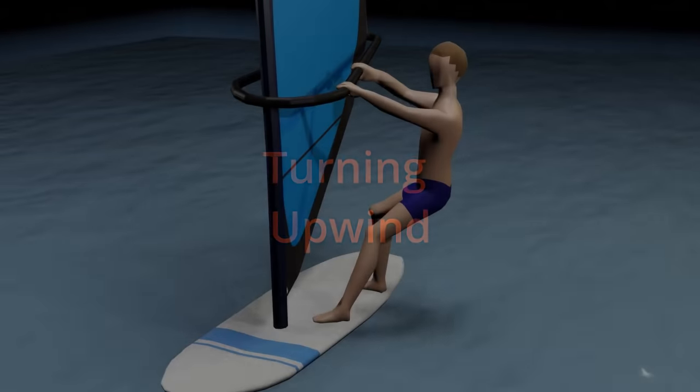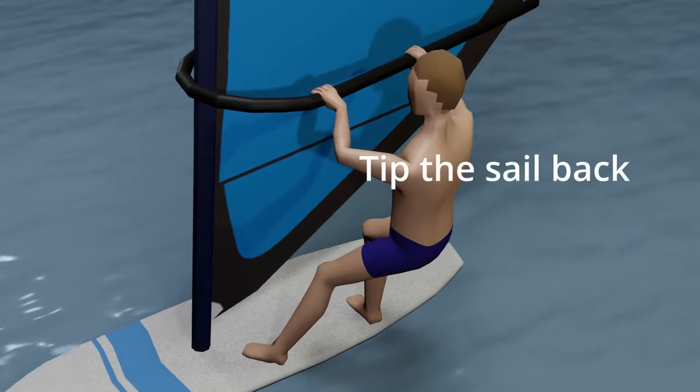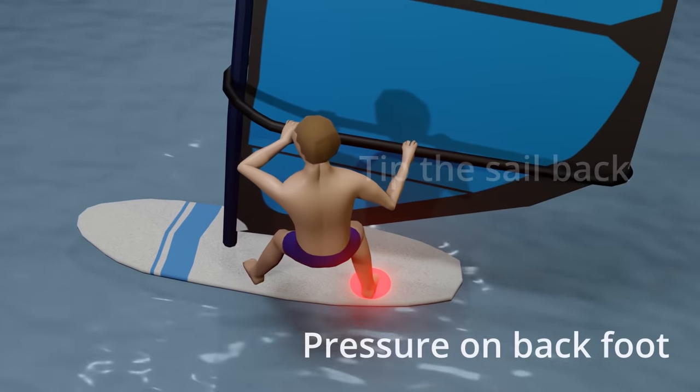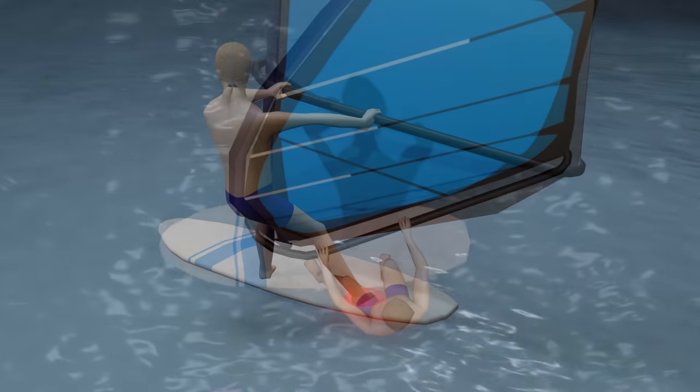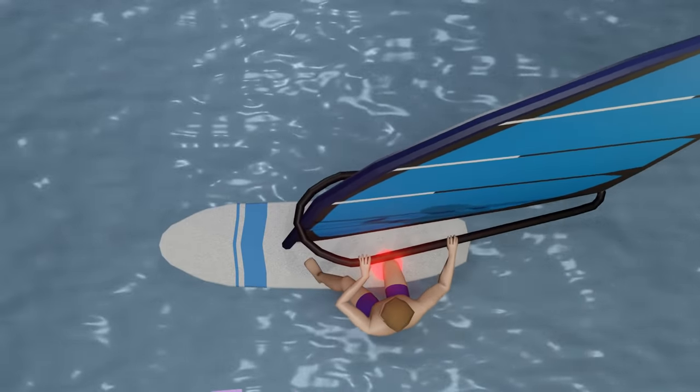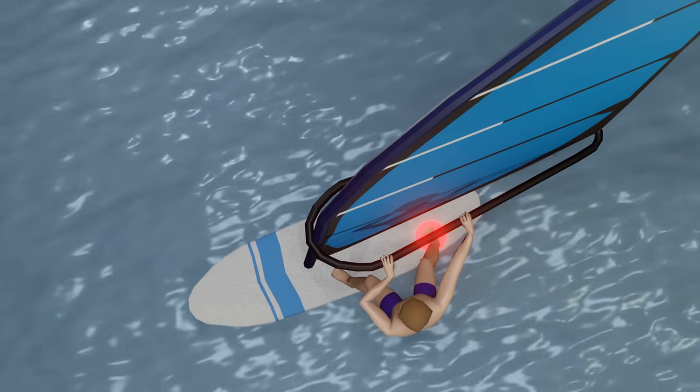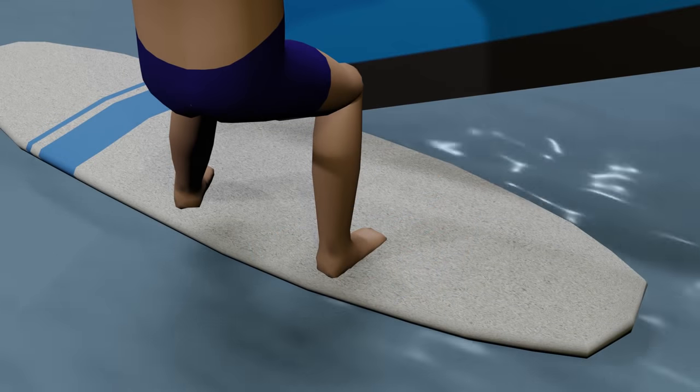So how do you steer the board? First, to steer upwind: tip the sail back. This transfers pressure to your back foot. This puts additional force on the back of the board to slide downwind, causing the nose or the bow of the board to point upwind.